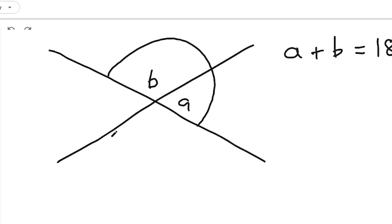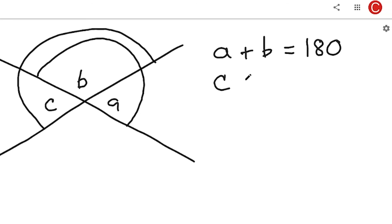Now, we could also label this angle down here. Notice that there's another straight line here. And then this, as in C plus B, these angles are also supplementary. So, we can write an equation for that as well: C plus B equals 180.